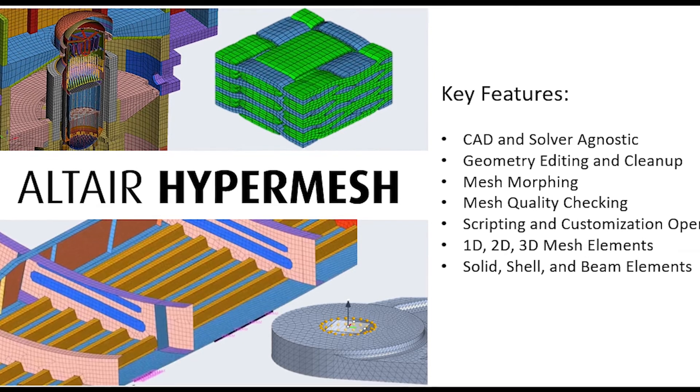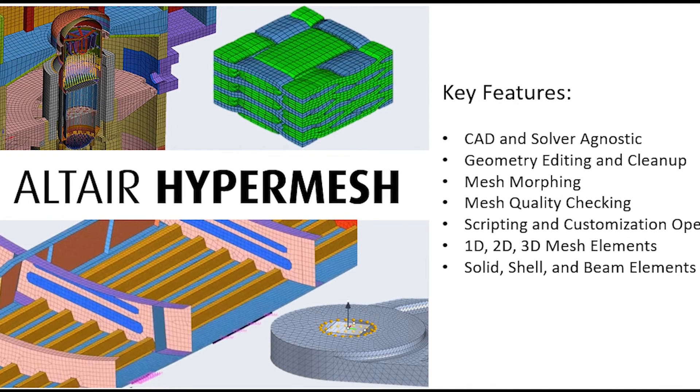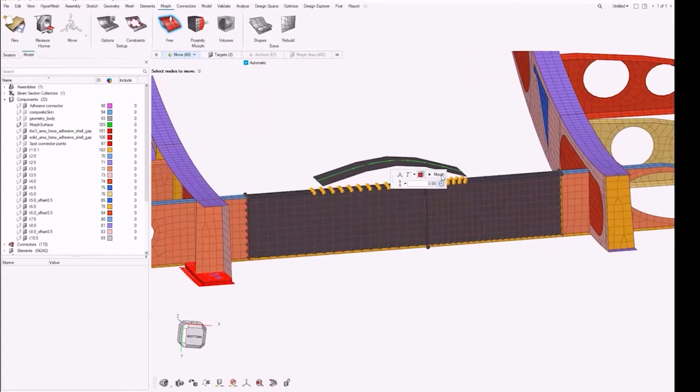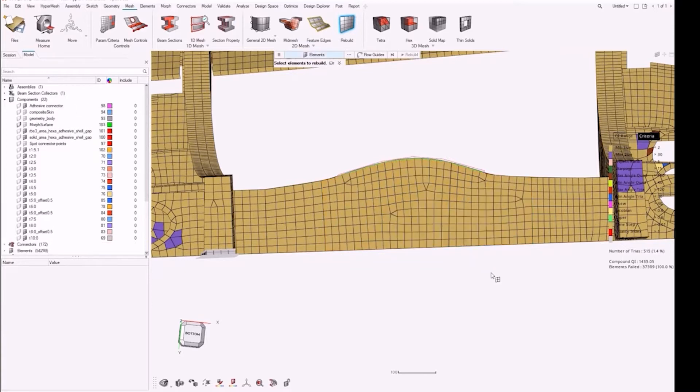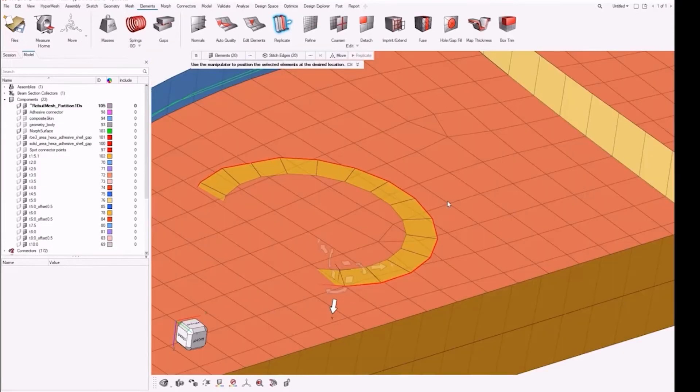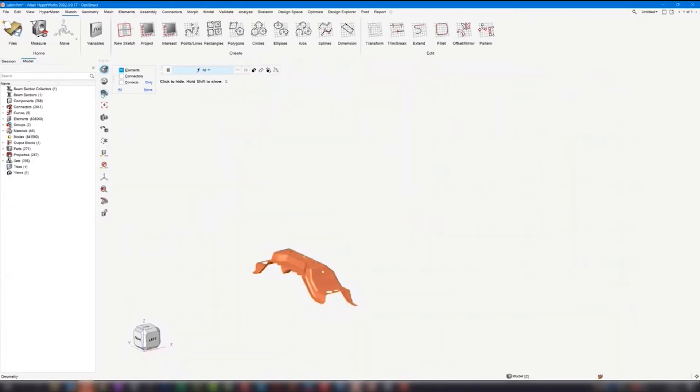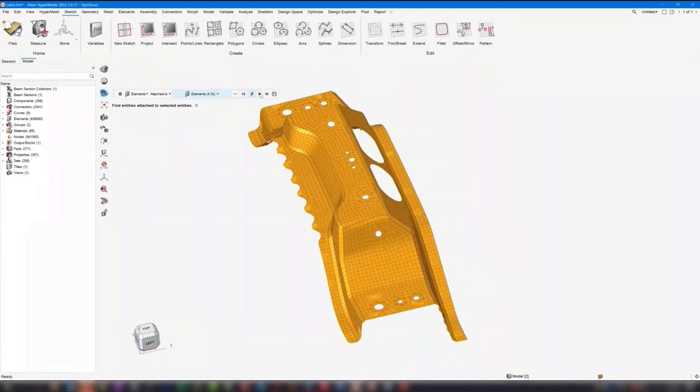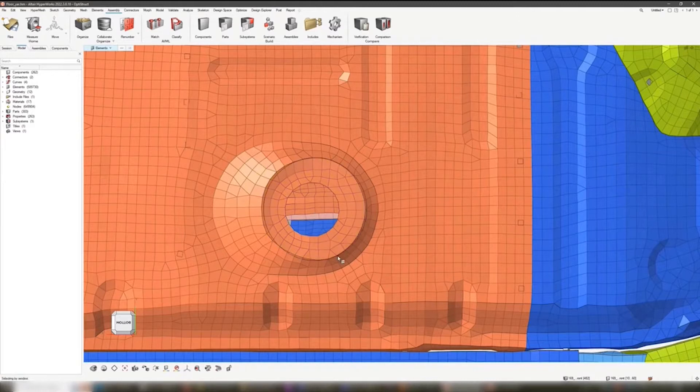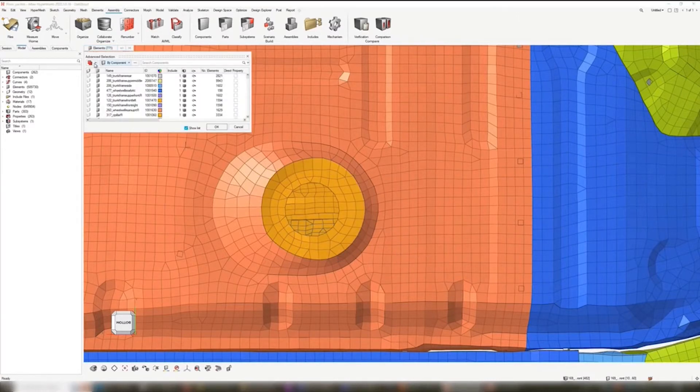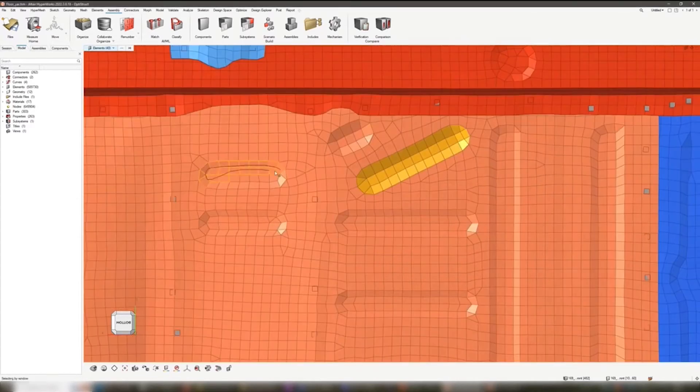Altair HyperMesh might be the most recognizable name in the entire portfolio. It is known as the leading pre-processing tool in the industry. We all know that meshing is one of, if not the most critical steps in the simulation process - if it's not set up correctly, then it's impossible to get accurate results on the back end. It's all built into the HyperWorks interface, so it's intuitive. It is both CAD and solver agnostic, so can work easily into most workflows, and gives you advanced controls over your 1D, 2D, and 3D meshes with tools like auto mesh, mesh morphing, shrink wrap, batch meshing, and geometry editing.